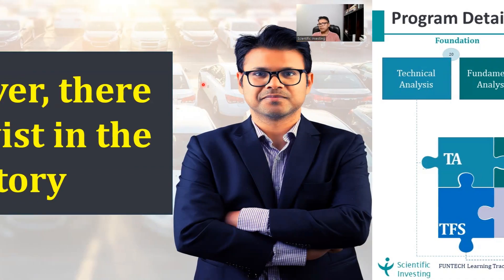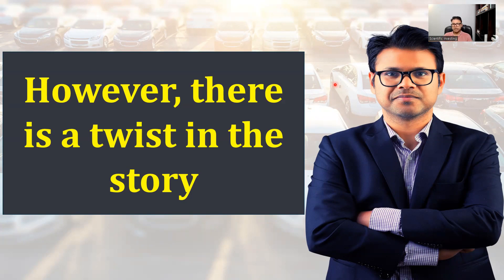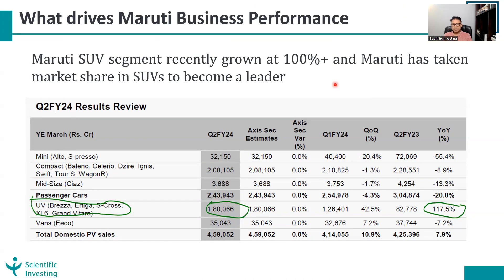Now there is a small twist in the Maruti story, which has been the story of small cars. These are the Q2 FY24 operational numbers for Maruti. What is interesting is the SUV segment for Maruti had a growth rate of 117 percent. In Q2 FY23, Maruti sold almost 83,000 SUVs, but this quarter Maruti has sold 1,80,000 SUVs — which is almost comparable to the smaller cars segment at 2.43 lakhs. One year back, Maruti sold 3 lakh small cars and 83,000 SUVs; now Maruti has sold 2.43 lakh small cars and 1.8 lakh SUVs.